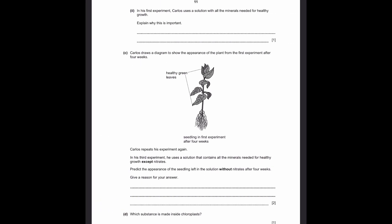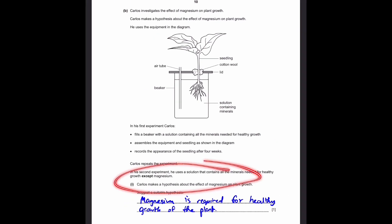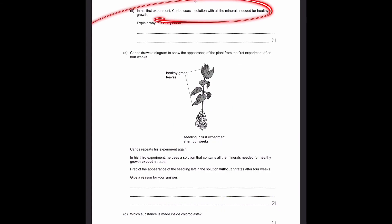Now let's go to part 2. In his first experiment, Carlos uses a solution with all the minerals needed for healthy growth. Well, if we just do the experiment without magnesium, as given here, what would we compare it to? This is what we compare it to. So, we know how a plant grows with all minerals required present. So, if one of them is not present, then how will the plant grow? That is our experiment here. So, it acts as a control variable. And we can compare any results with this result.